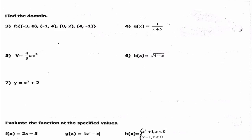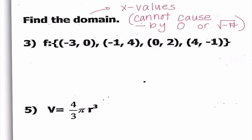The next thing we're going to work on is finding the domain of ordered pairs or equations. What we really need to keep in mind is that the domain is all the x values, but it cannot cause division by zero or the square root of a negative number, because we know the square root of a negative number means things would be imaginary. Those are the things we're going to think about when we look at each problem on a case-by-case scenario.